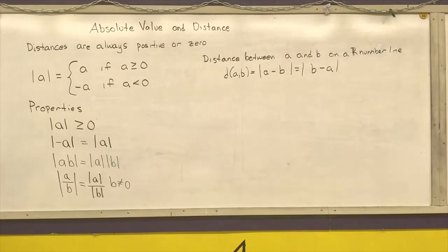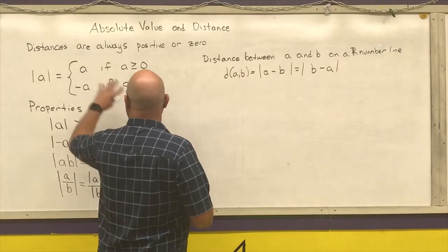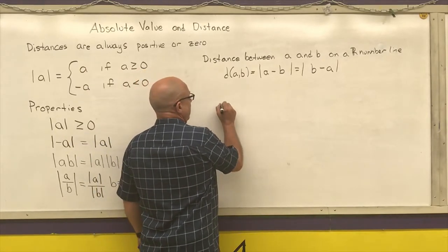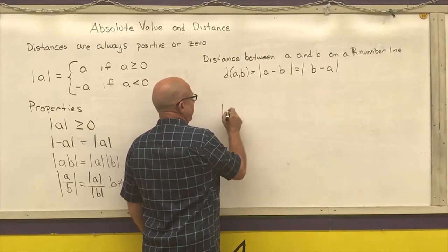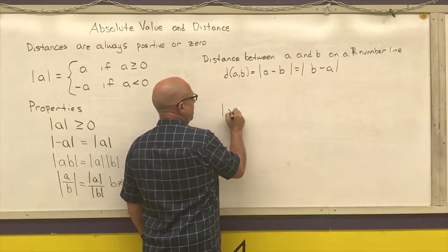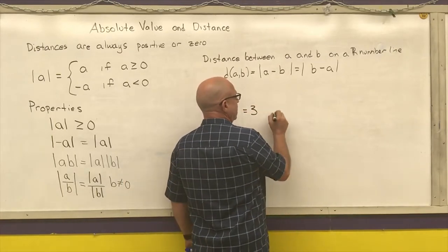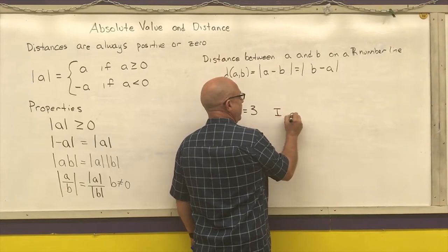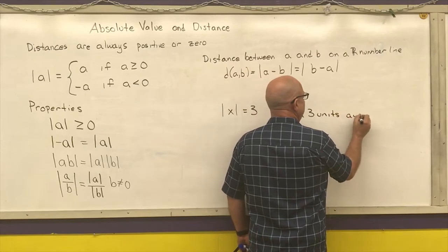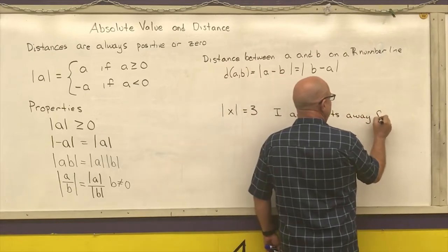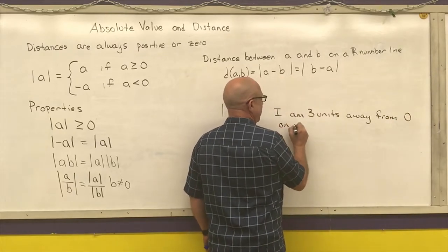So that basically what distance is doing is it's telling us how far away something is. Same thing with absolute value. The absolute value, if I know that the absolute value of X is equal to three, that means I am three units away from zero on the number line.